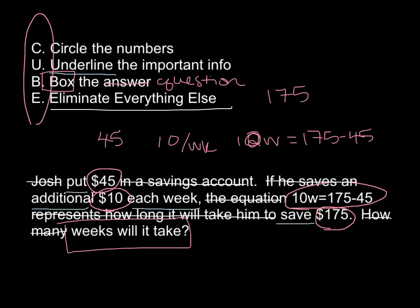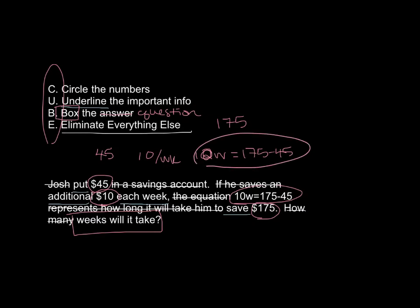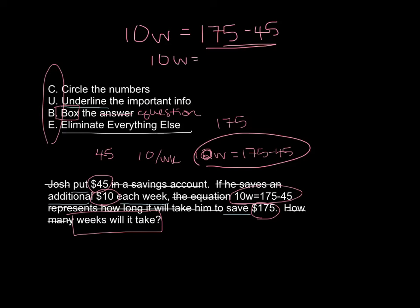We need to figure out how many weeks it will take. Looking at this equation, I'm going to rewrite it as 10W equals $175 minus $45. We can do that arithmetic: $175 minus $45 gives us $130. So now we have 10W equals $130. We need to divide both sides, and we get W equals $13.